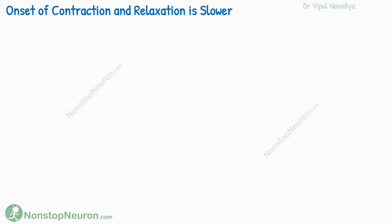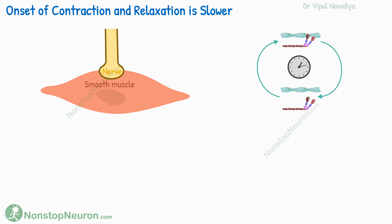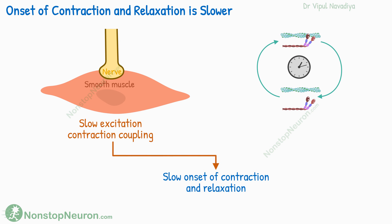The next difference is a result of the earlier differences. The onset of contraction as well as relaxation of smooth muscle is slower than that in skeletal muscles. This is because the excitation-contraction coupling is slower, and also the crossbridge interaction is slower in smooth muscles.